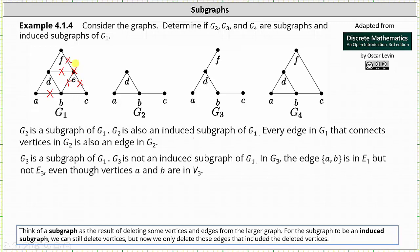So again, G3 is a subgraph of G1, and G3 is not an induced subgraph of G1. More formally, the edge AB is in E1, the set of edges for the graph of G1, but not in the set of edges of G3, even though the vertices A and B are in V3.